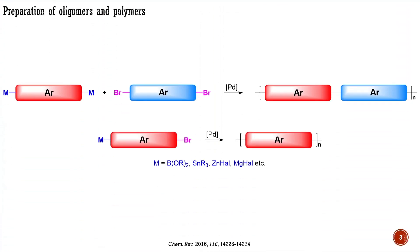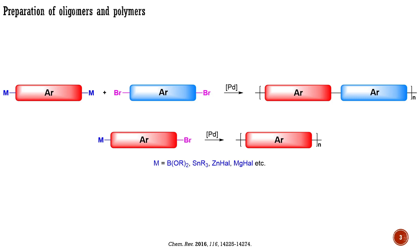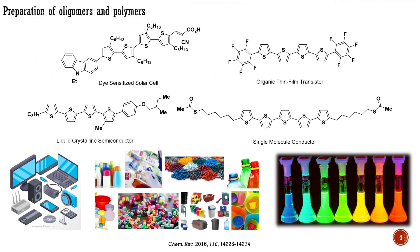Traditional approaches to conjugated oligomers and polymers are based on cross-coupling reactions. The first option involves the coupling of ORNs possessing two organometallic functionalities with dihalogenated ORNs. The second option is based on the self-coupling of ORNs possessing both organometallic and halide functionalities. Conjugated oligomers and polymers prepared by these methodologies can be applied as organic semiconductors, fluorescent probes, etc. Selected examples can be seen here.